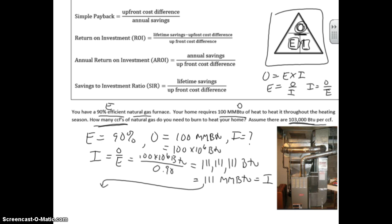Simple factor analysis problem here. We have 111 times 10 to the 6th BTU.